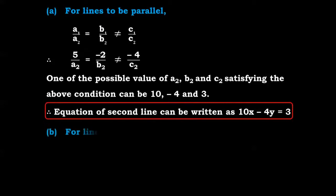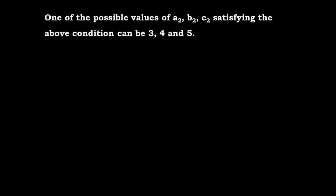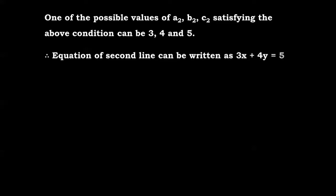For the lines to be intersecting, the condition is a1/a2 not equal to b1/b2. Substituting: 5/a2 = -2/b2, not equal to -4/c2. One possible set of values for a2, b2, c2 satisfying the above condition can be 3, 4, 5. So the equation of the second line can be written as 3x + 4y = 5.